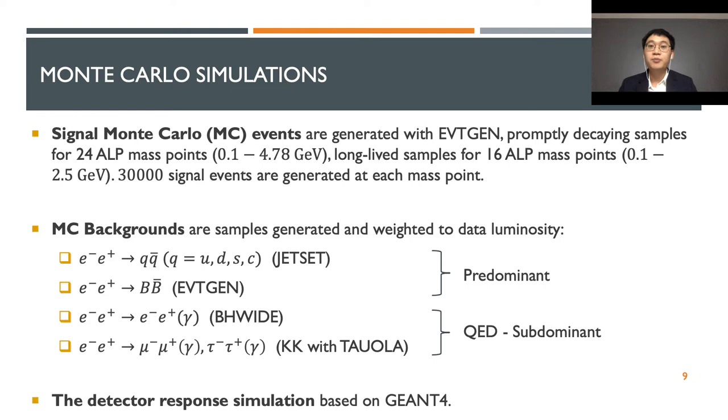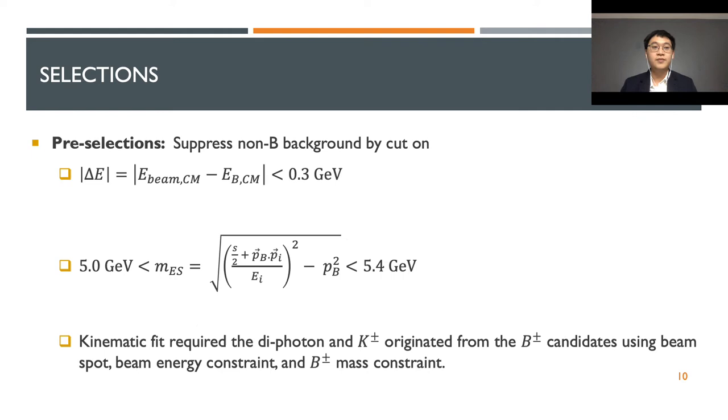For the Monte Carlo simulation, we create 24 axion mass points for the prompt decay and 16 axion mass points for the long-lived decay. Each mass point has 30,000 events. Meanwhile, the Monte Carlo backgrounds are samples generated and weighted to the data luminosity, which includes the predominant background from QCD and B-Bbar as well as the subdominant background from QED. We also simulated the detector response based on Geant4.